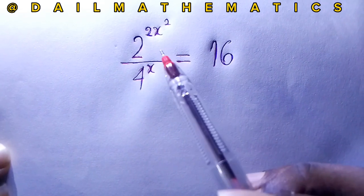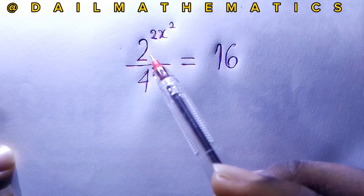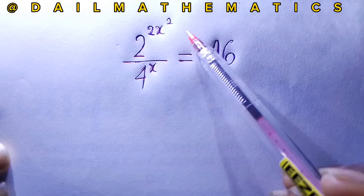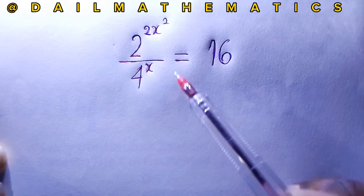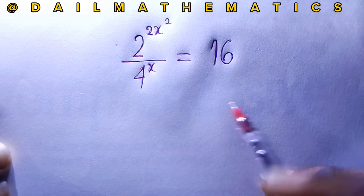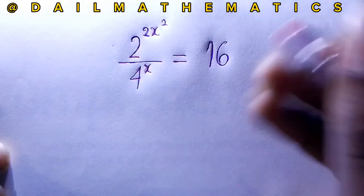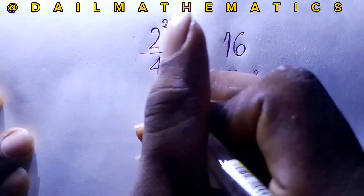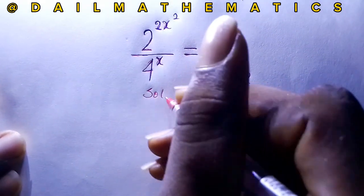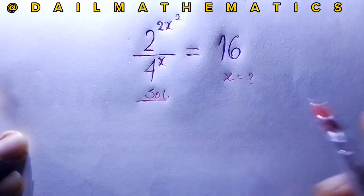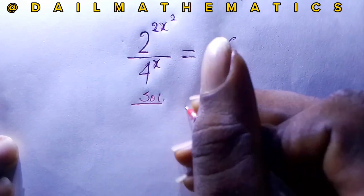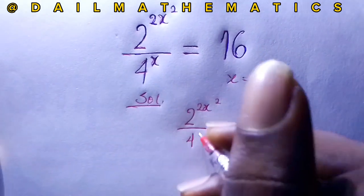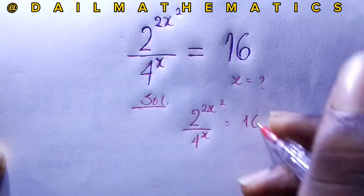Welcome to this episode of Daily Mathematics. We have a very nice question here: 2 raised to the power of 2x squared, divided by 4 raised to the power of x, equals 16. We are to find x.